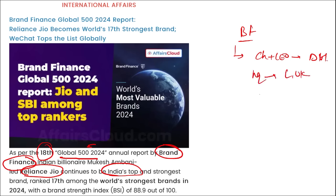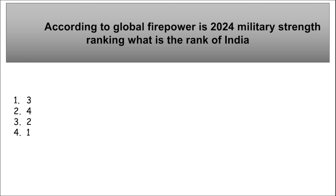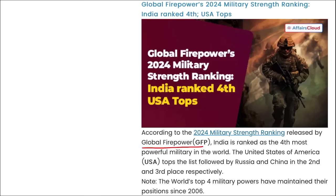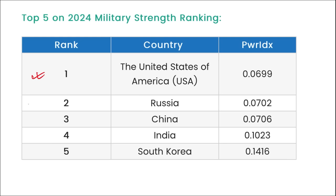According to the Global Firepower 2024 military strength ranking, what is the rank of India? India stood at the fourth position. On top is the USA, then Russia, then China at third, India at fourth, and South Korea at fifth. Also note: the USA spends the most on military spending, at almost $831 billion.